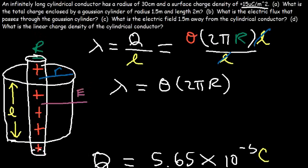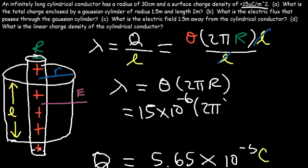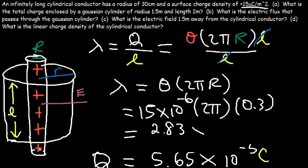So the linear charge density is about 2.83×10⁻⁵ coulombs per meter.